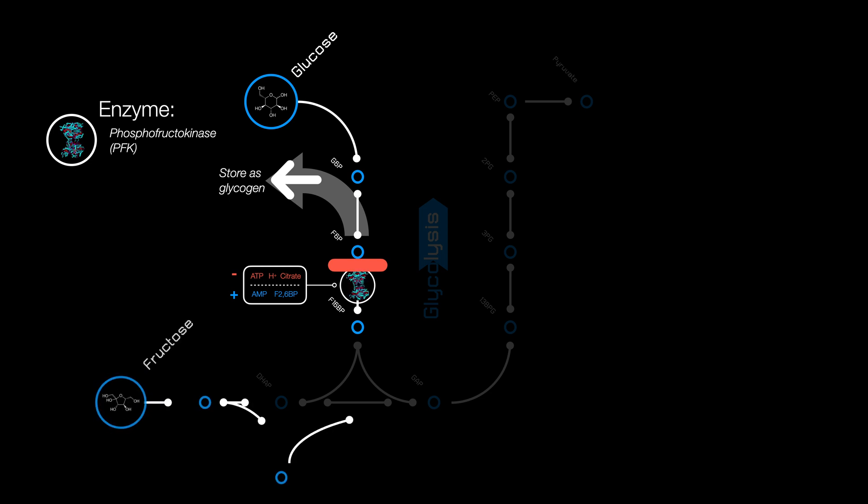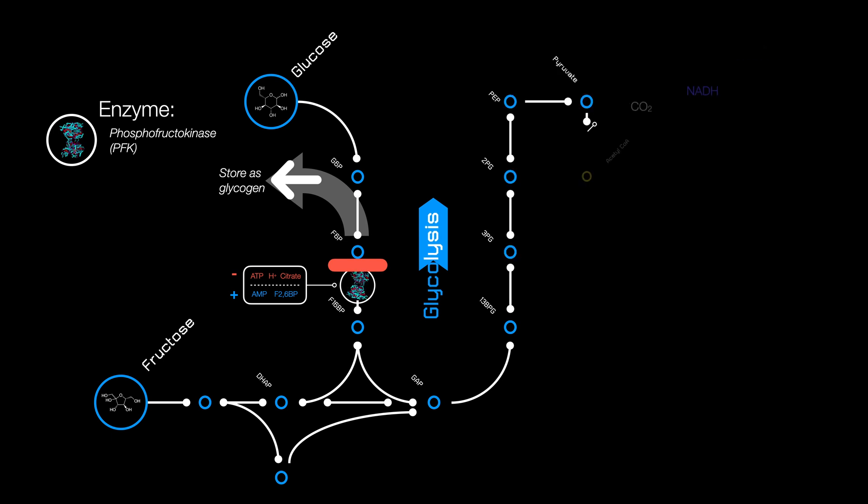Fructose bypasses all this by entering after the PFK step. Not a problem if you don't eat too much, but if you do, all of this will push the second half of glycolysis into overdrive, making pyruvate and acetyl-CoA.